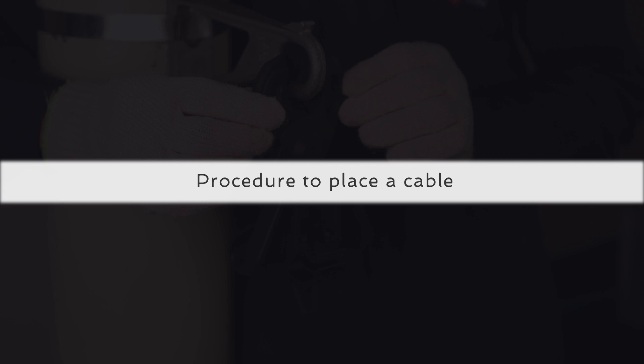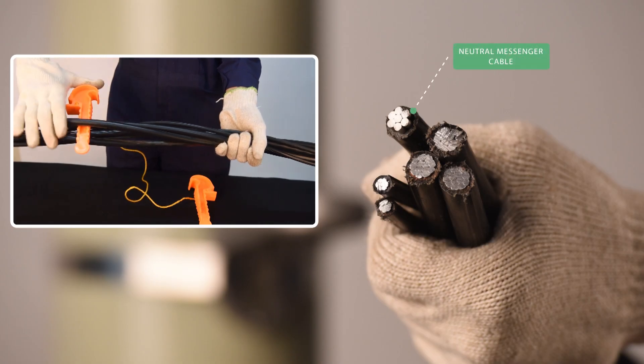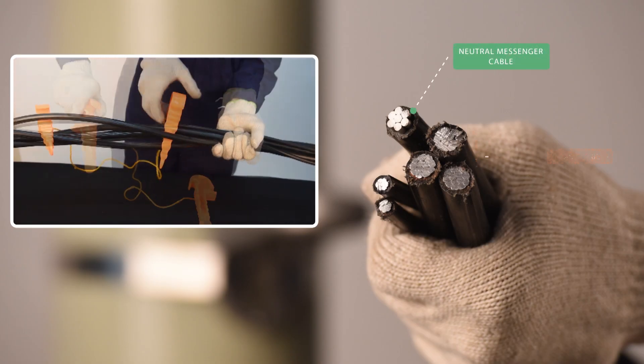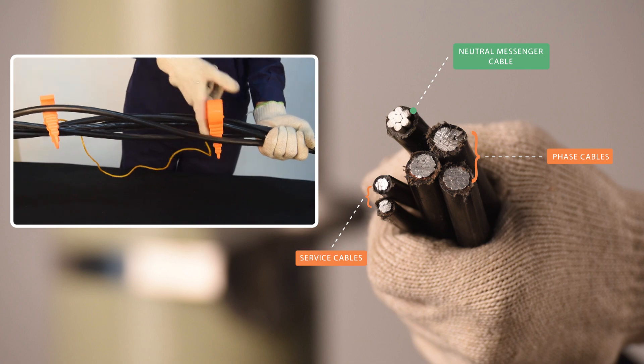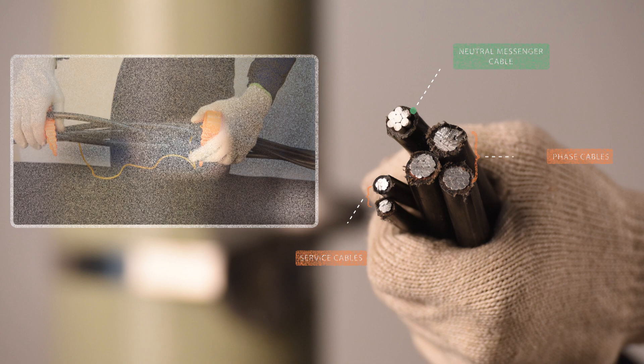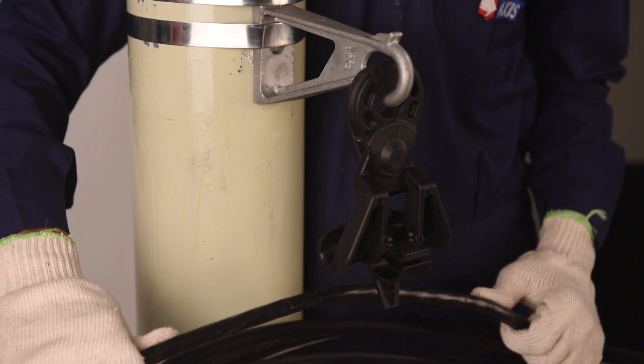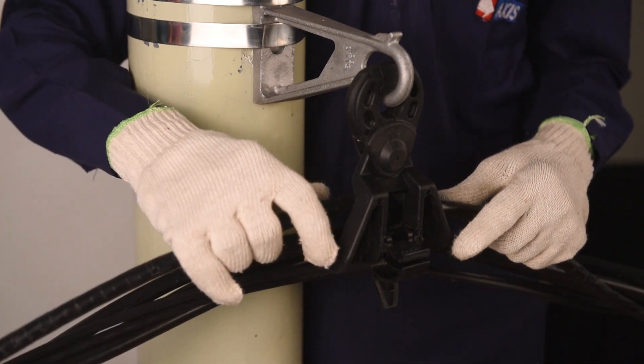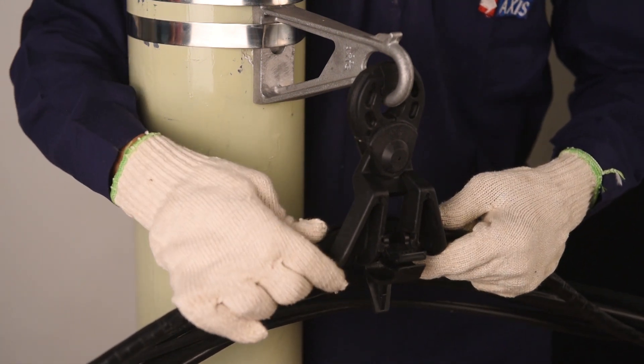Let us now understand the procedure to place a cable. Identify the neutral messenger cable and separate it from the other face cables using a face separator. Place the neutral messenger cable in the holding area of the clamp body.